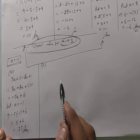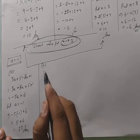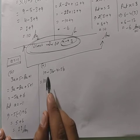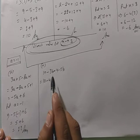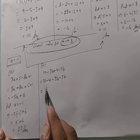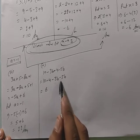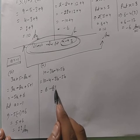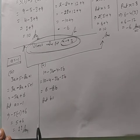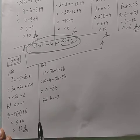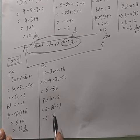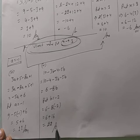Fourth part: 10 minus 3b minus 4 minus 5b. Simplify: 10 minus 4 = 6, और minus 3b minus 5b — minus minus plus होता है — तो minus 8b. Simplified: 6 minus 8b. अब b = minus 2 put करो: 6 minus 8×(minus 2) = 6 plus 16 = 22.